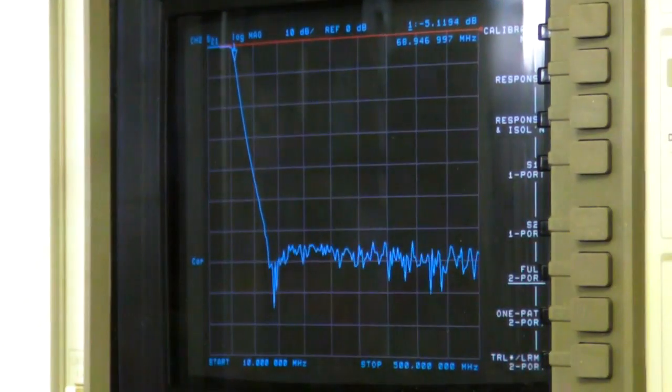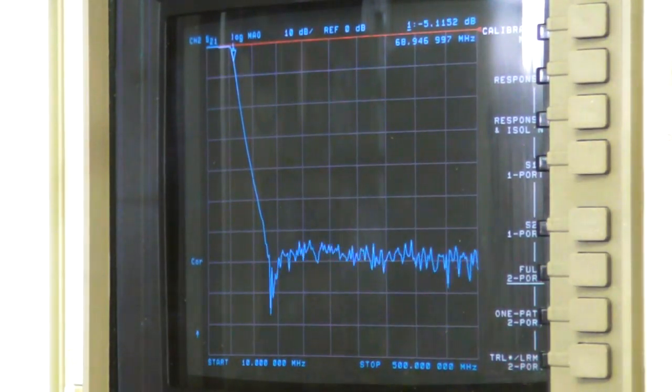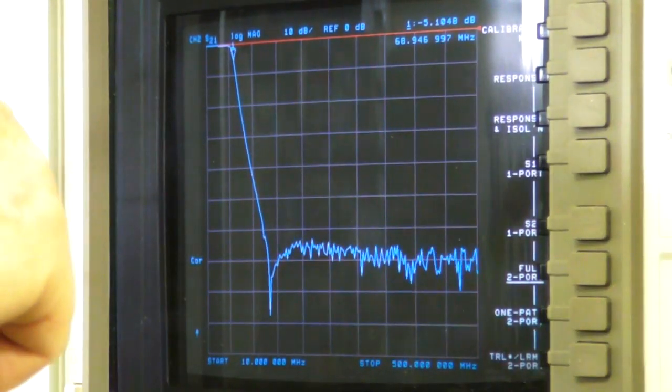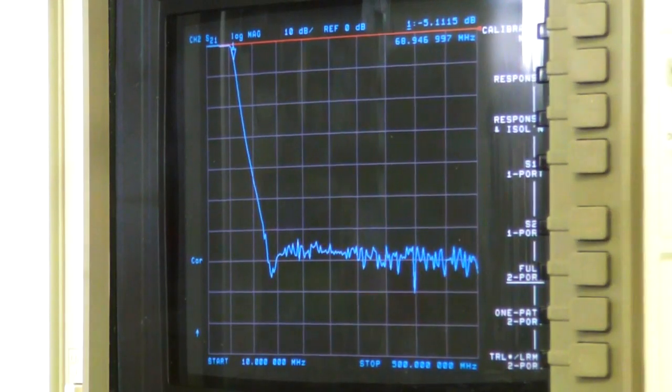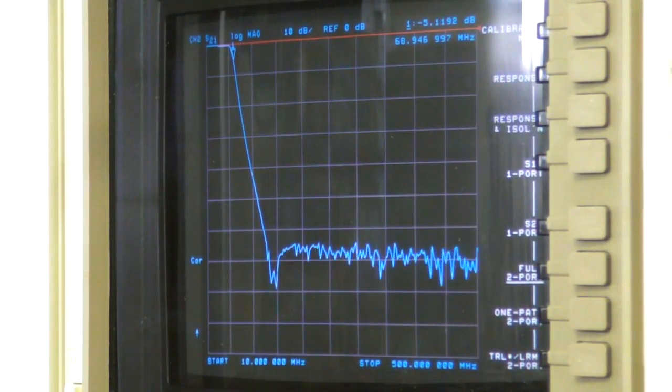That's the transmission characteristic. Now we could measure either way. Right now we're measuring S21, which is the signal going from port 1 to port 2, it's the through signal. We could change it to S12, which is the signal going the other way. If we were measuring an amplifier and we wanted to measure reverse isolation, the instrument knows how to do that.